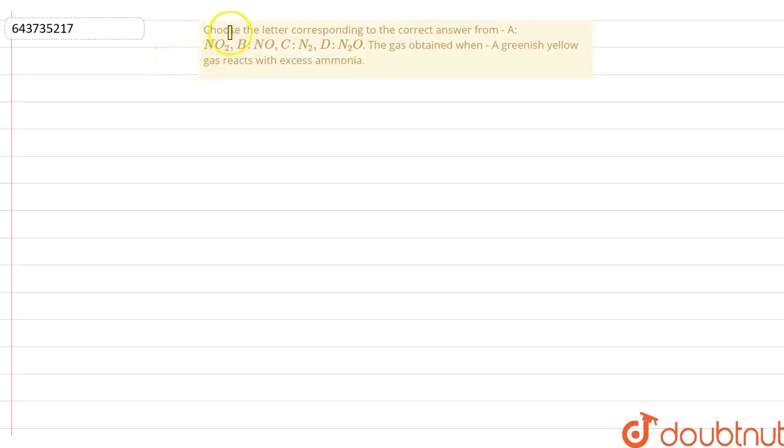This question says choose the letter corresponding to the correct answer from: A, that is NO2; B, NO; C, that is N2; and D, N2O. We have to tell the gas obtained when a greenish yellow gas reacts with excess ammonia.